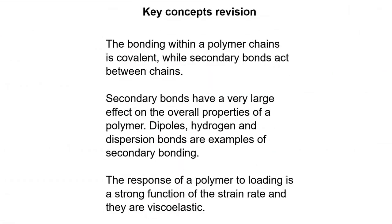So as we've seen, the bonding within a polymer chain is covalent, whereas secondary bonds act between polymer chains. There is an order of magnitude difference in the bonding energies associated between the primary covalent bond and the other types of secondary bonds that can occur in polymers.